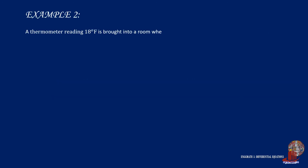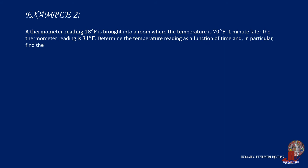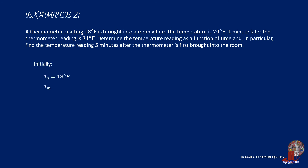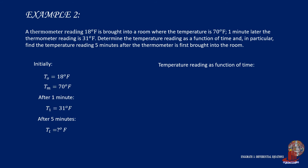Example number 2. A thermometer reading 18 degrees Fahrenheit is brought into a room where the temperature is 70 degrees. A minute later, the thermometer reading is 31 degrees Fahrenheit. Determine the temperature reading as a function of time, and in particular, find the temperature reading 5 minutes after the thermometer is first brought into the room. The given will be summarized as T sub 0 is equal to 18 degrees Fahrenheit and T sub M is equal to 70 degrees. After a minute, the temperature of the particle rises to 31 degrees Fahrenheit. We are asked to know the resulting temperature after 5 minutes, starting with identifying the temperature reading as a function of time and finding the value of C.